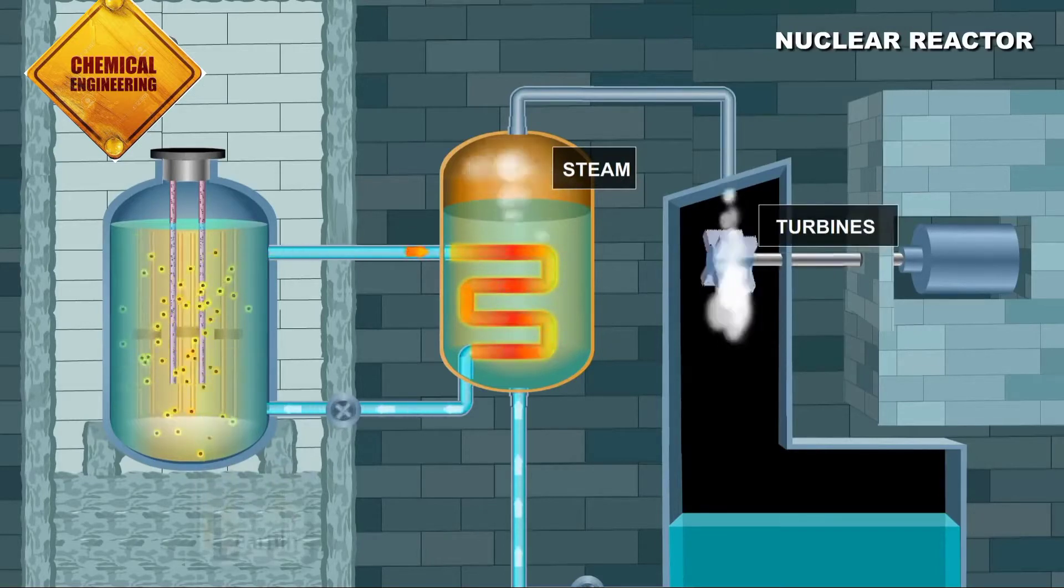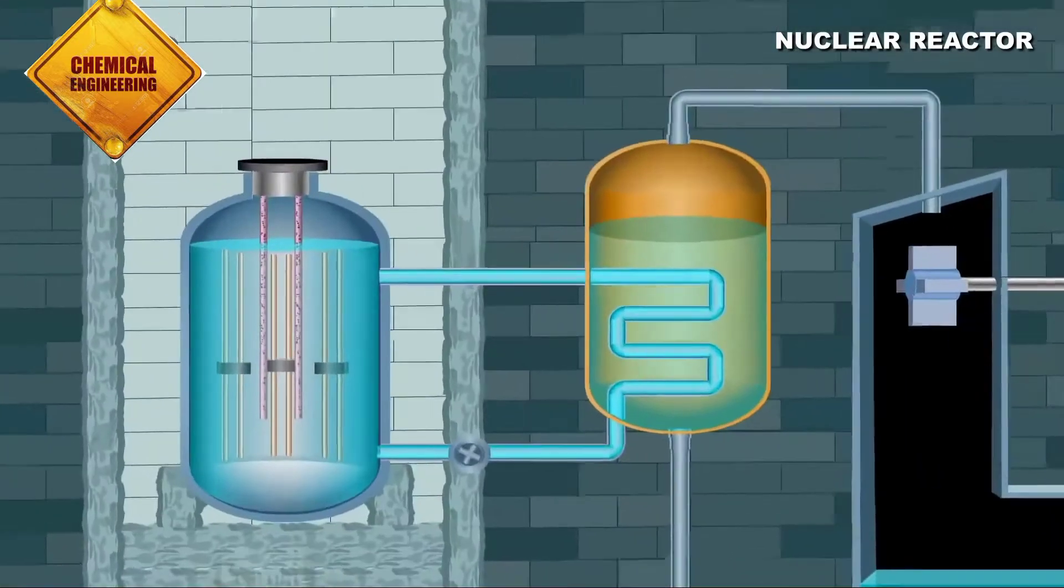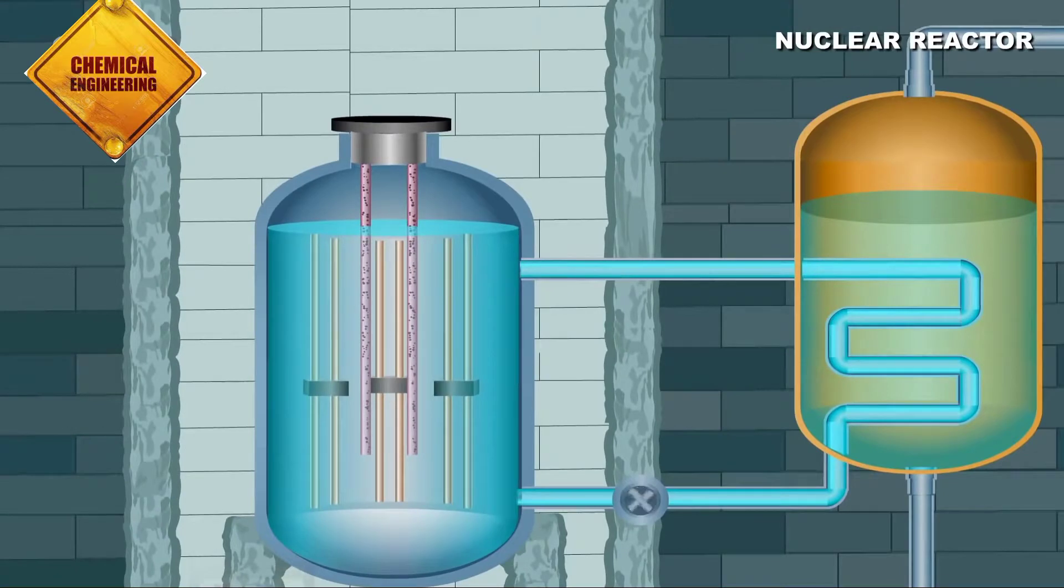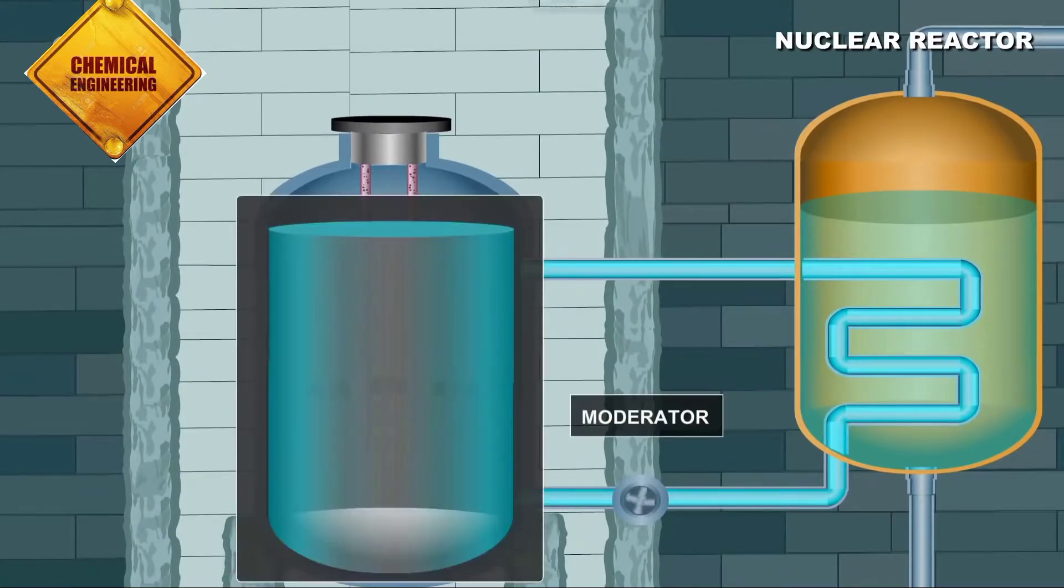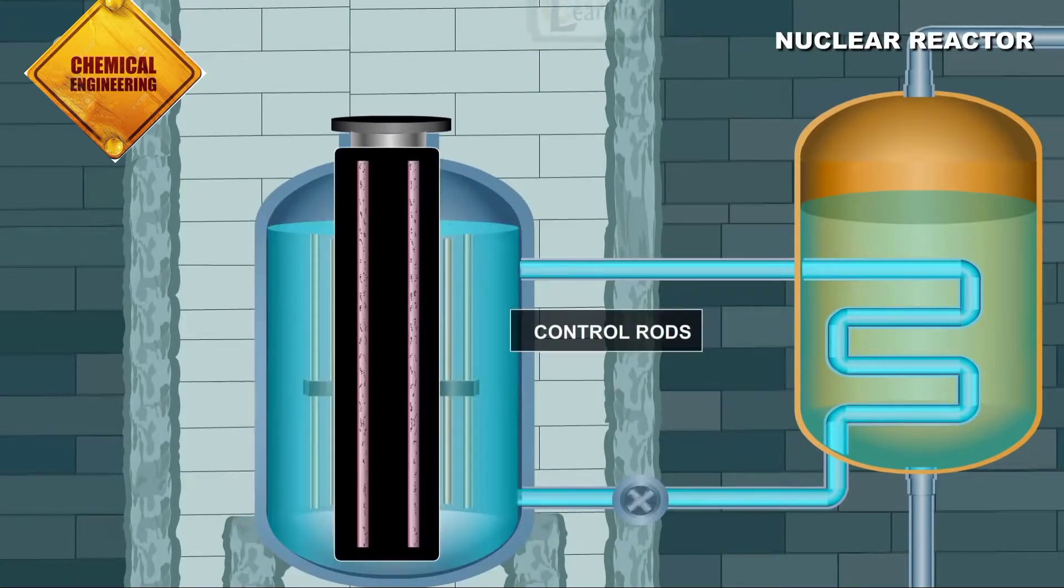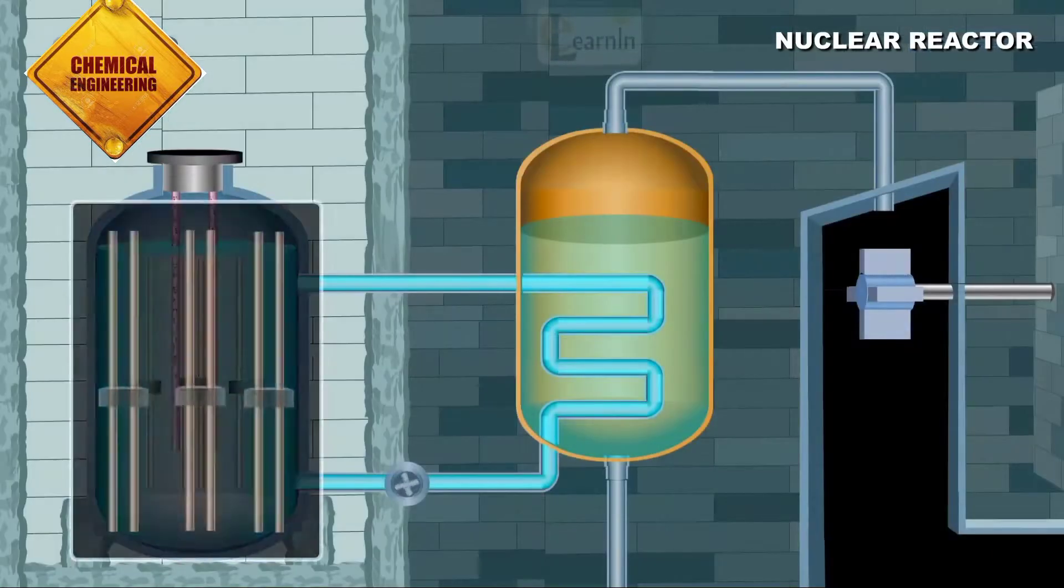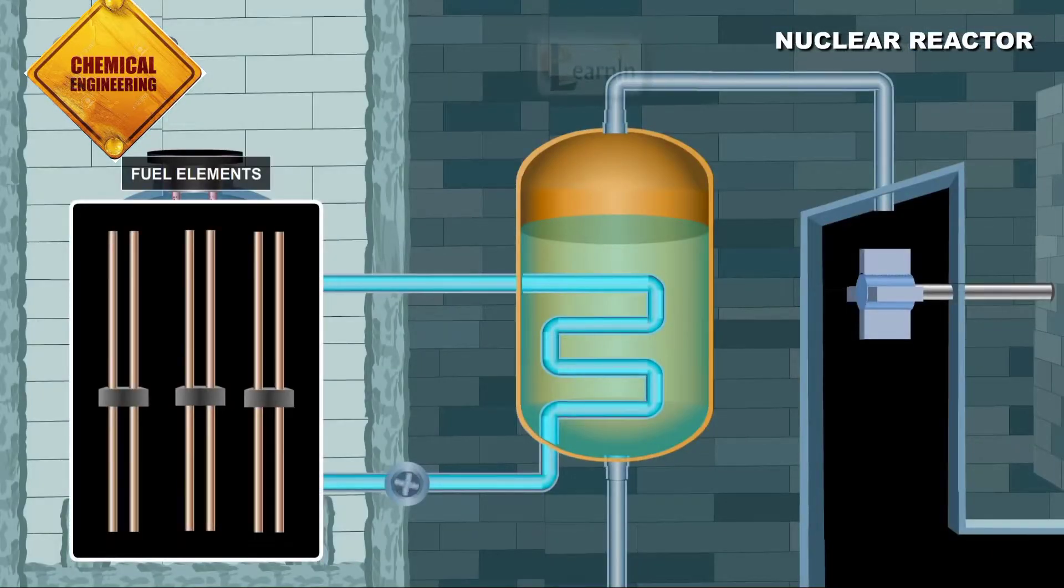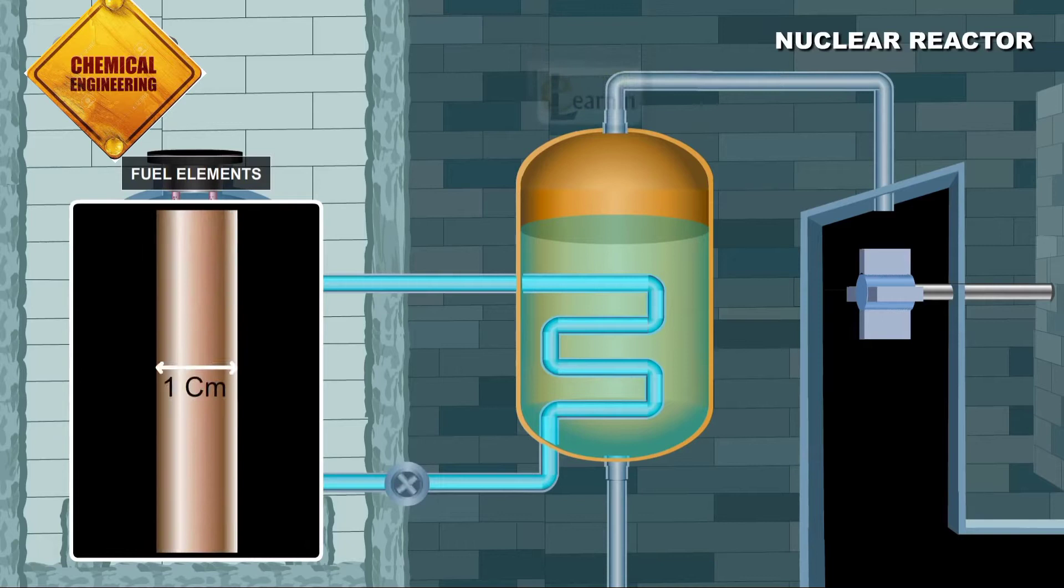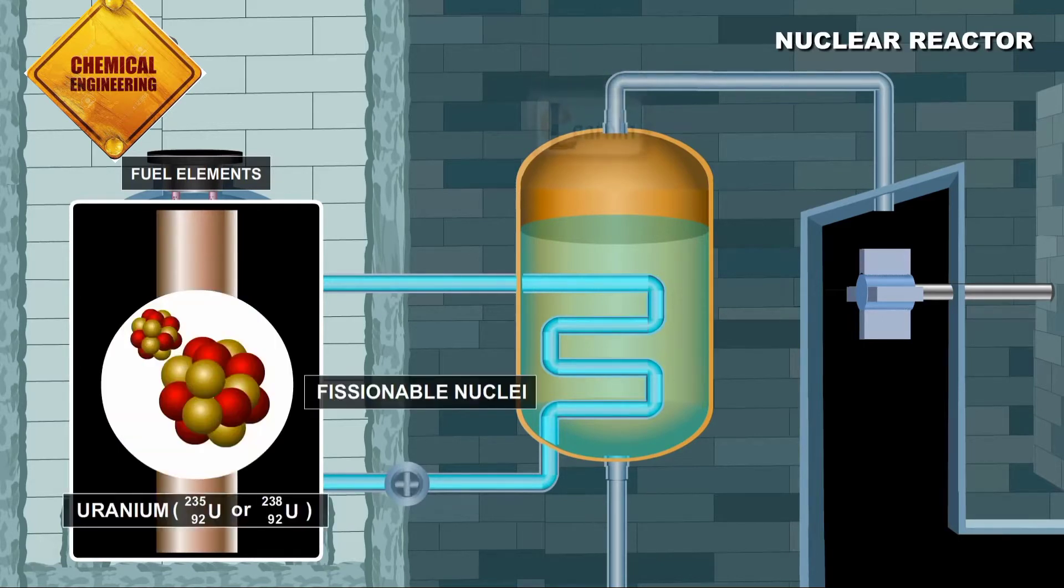A nuclear reactor consists of three crucial components: fuel elements, moderator, and control rods. Fuel elements come usually in the shape of thin rods of about one centimeter in diameter and contain fissionable nuclei like uranium-235 or uranium-238.